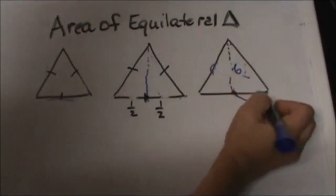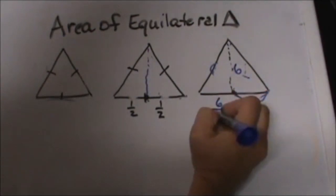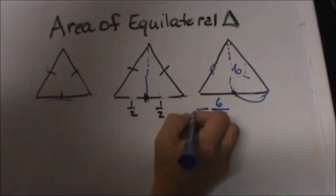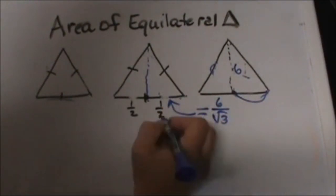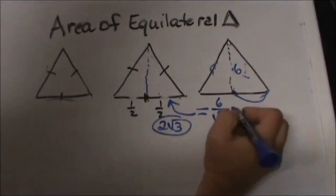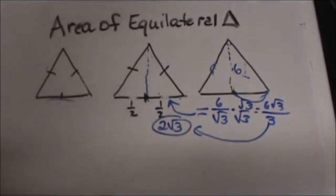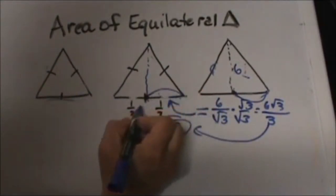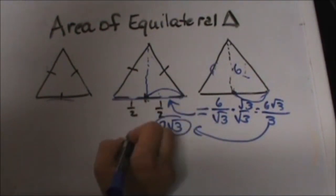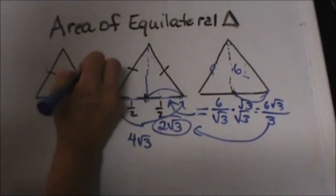To work from this altitude back to the shorter leg, instead of multiplying by √3, I'm going to divide by √3. So 6 divided by √3 gives me this side. I rationalize that by multiplying by √3 over √3, giving me 6√3 over 3, which simplifies to 2√3. Now that's just this half-length, so I need to double it to get the full side length — 2√3 times 2 is 4√3. That means all three sides are 4√3.